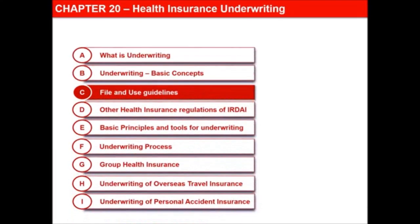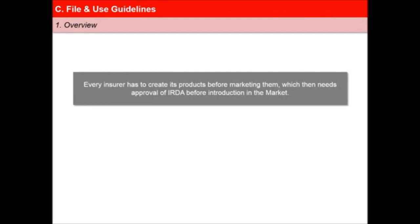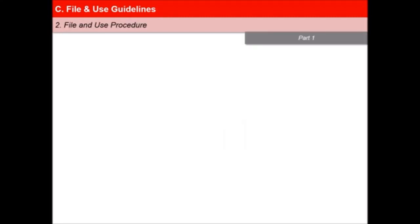In this next video of the lesson, Health Insurance Underwriting, we will learn about file and use guidelines. Every insurer has to create his products before marketing them, which needs to get an approval from IRDA before introduction in the market. The product needs to be filed with the regulator under file and use provisions. Once introduced, product withdrawal also needs to follow the corresponding guidelines. As per IRDA guidelines, the file and use procedure for health insurance products possesses the following points.